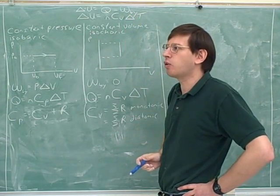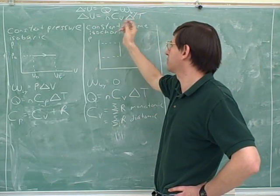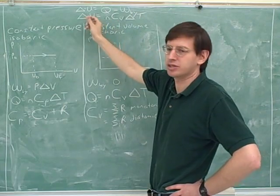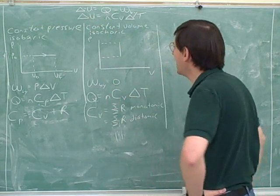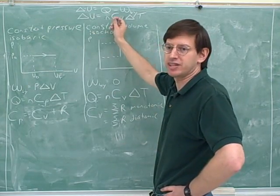And again it makes sense that all we really need to know is the change in temperature. Delta U only depends on the change in temperature so it makes sense. There's a formula that would relate the change in temperature to delta U. And it's just a weird curiosity that it happens to have C sub V in it.